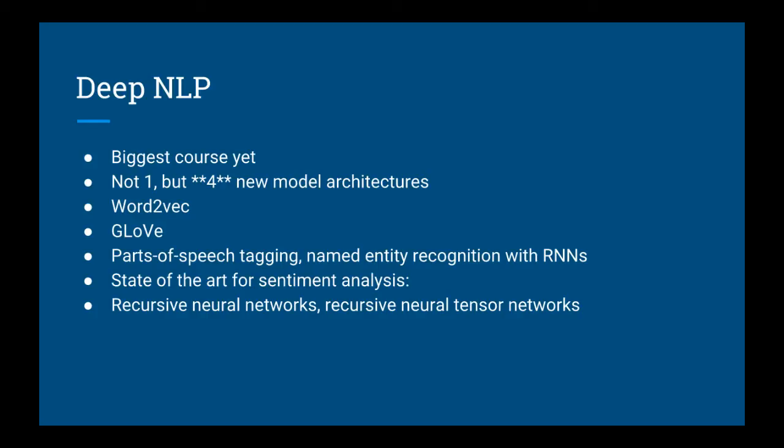Next, we'll take a step back and revisit two classical NLP problems: parts of speech tagging and named entity recognition. Before, we just assumed that an API could do this for us, but now you'll learn how you can do it on your own. You'll see that neural networks can be used at pretty much every stage of your NLP machine learning pipeline.